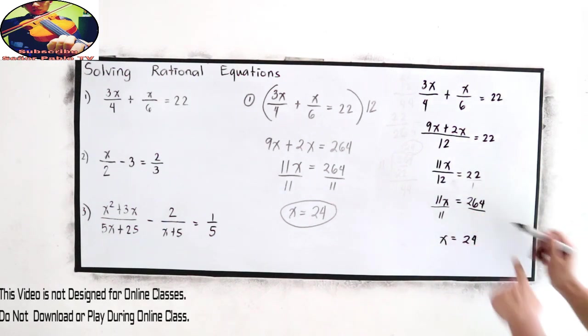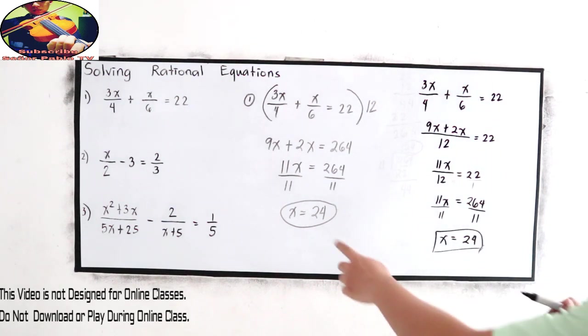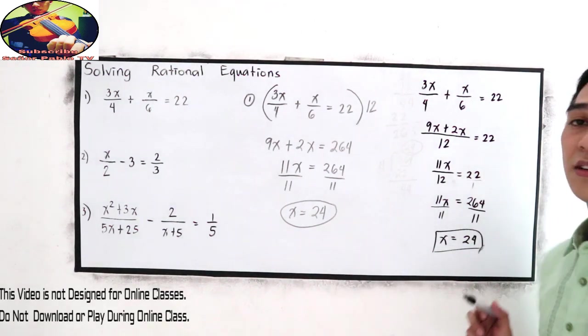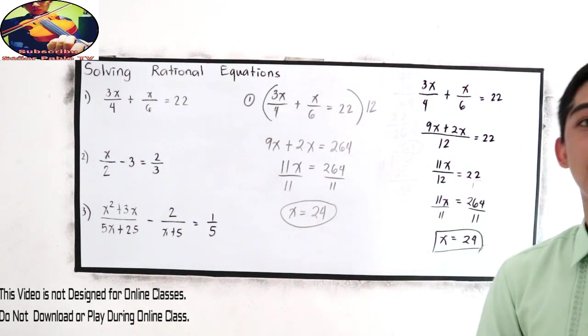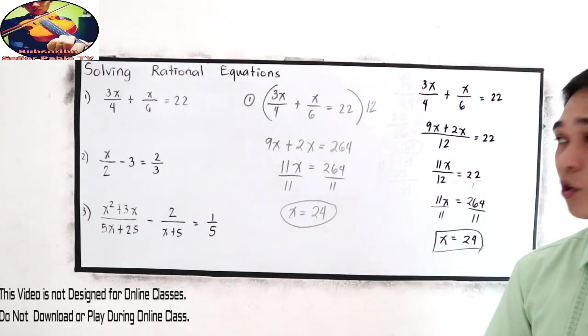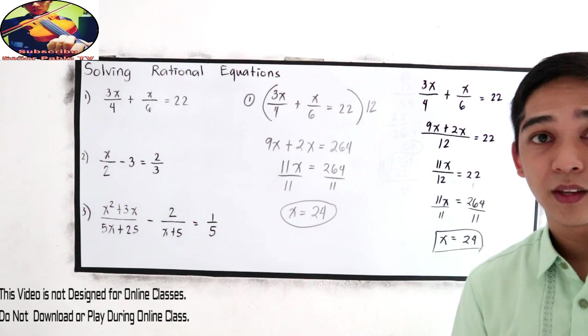x is equal to 24. They are the same. So whatever method we're going to use, you will come up with the same answer.